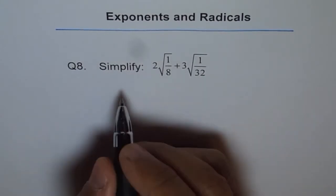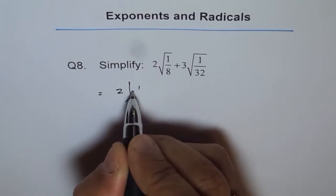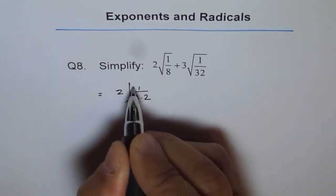So we can write this as equal to 2, and within the square root we have 1 in the numerator and 8 could be written as 4 times 2, right?